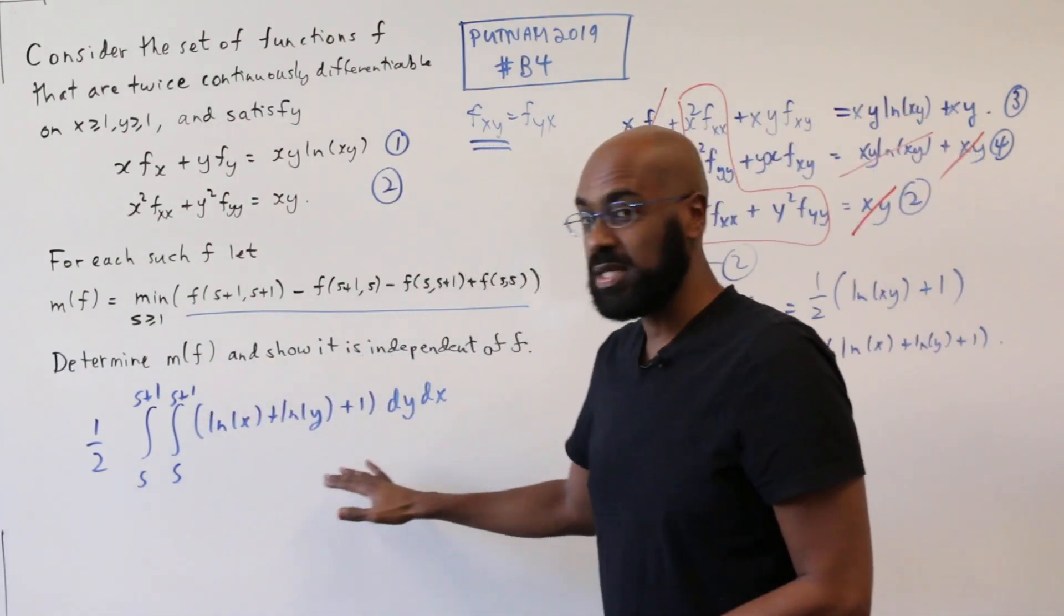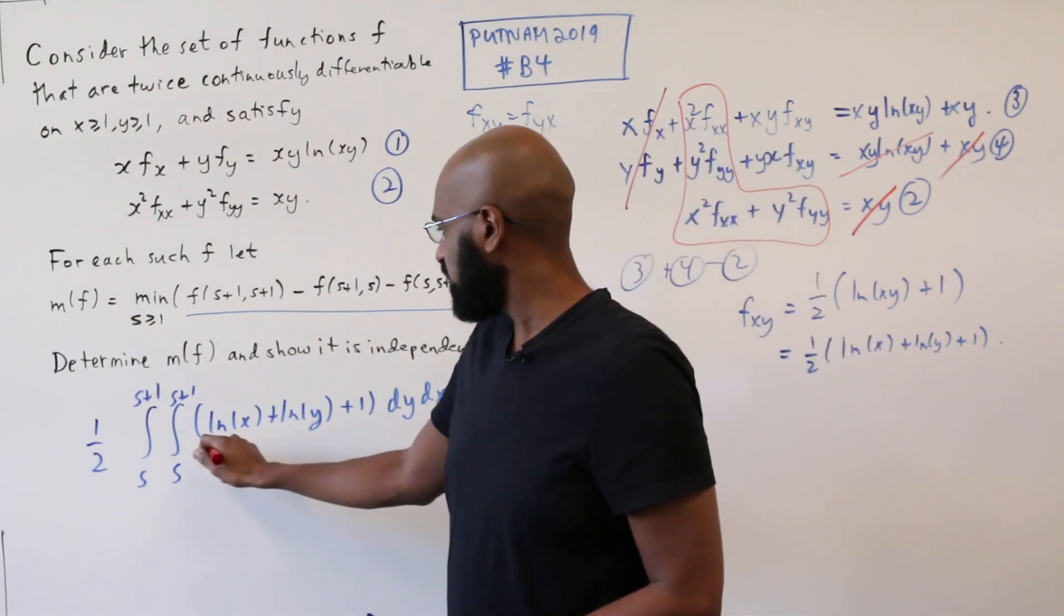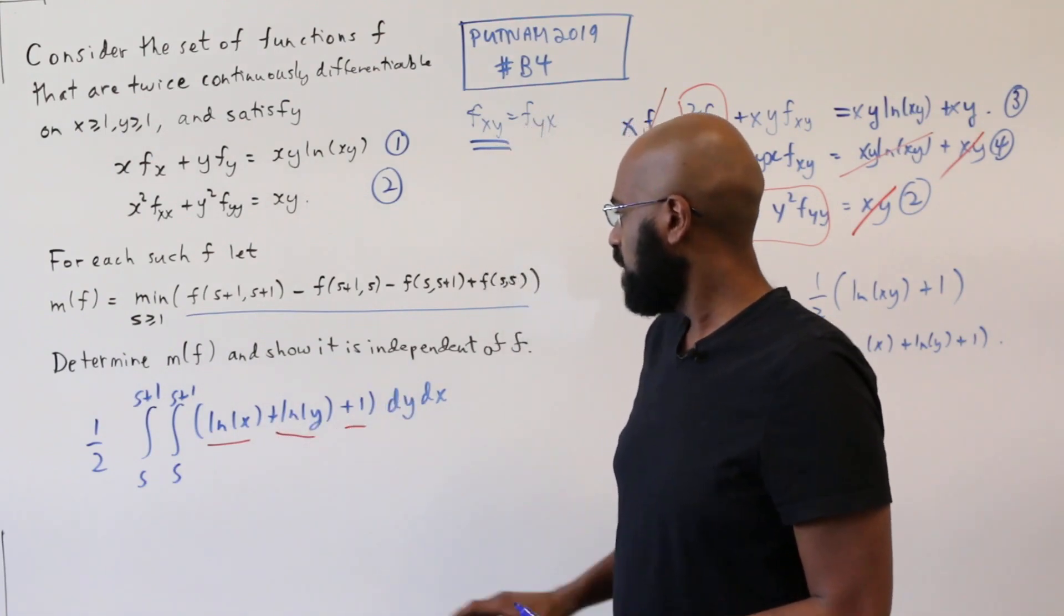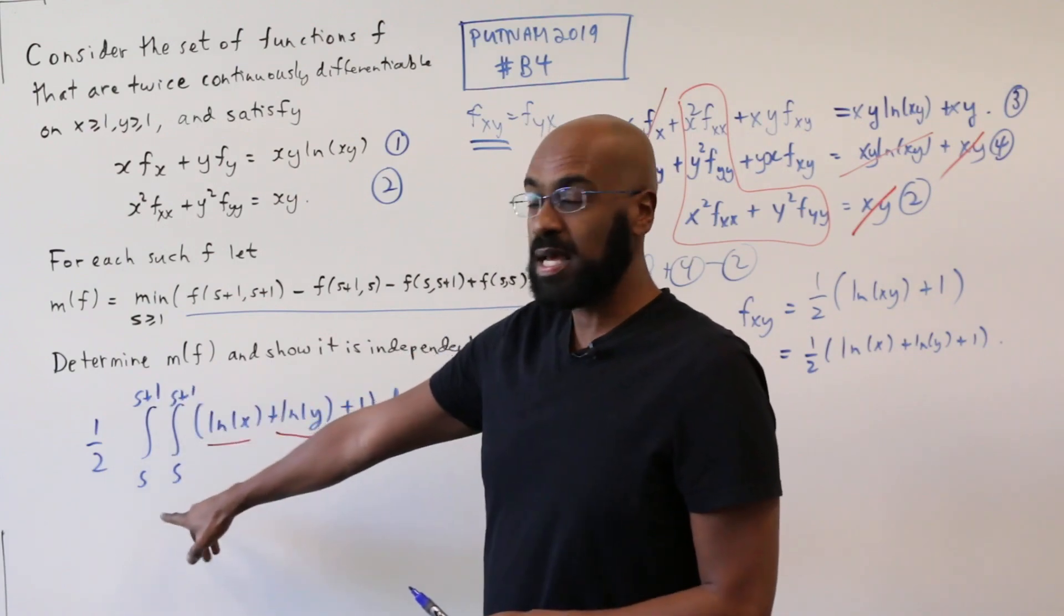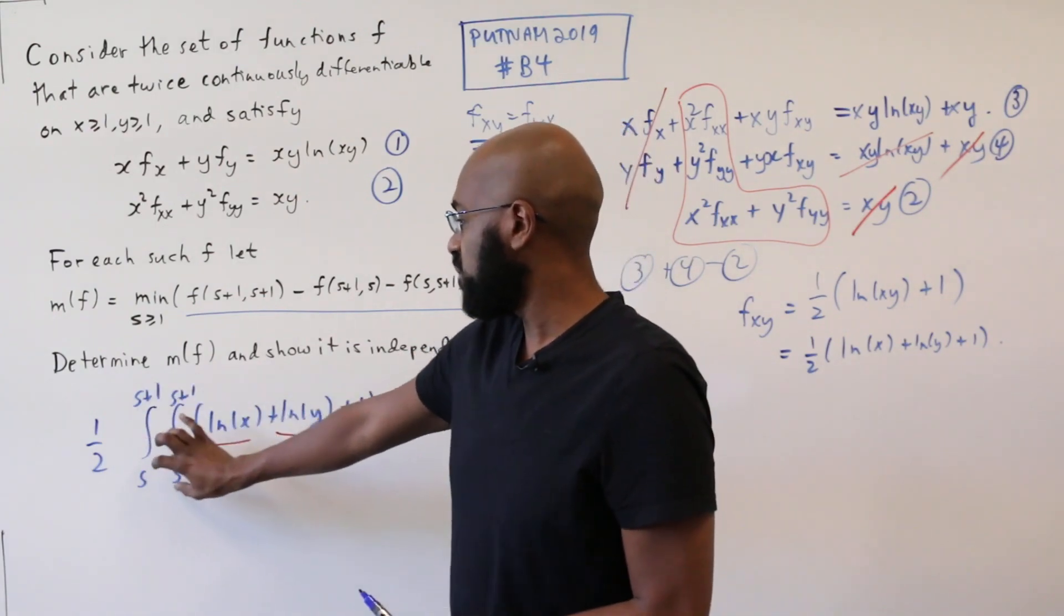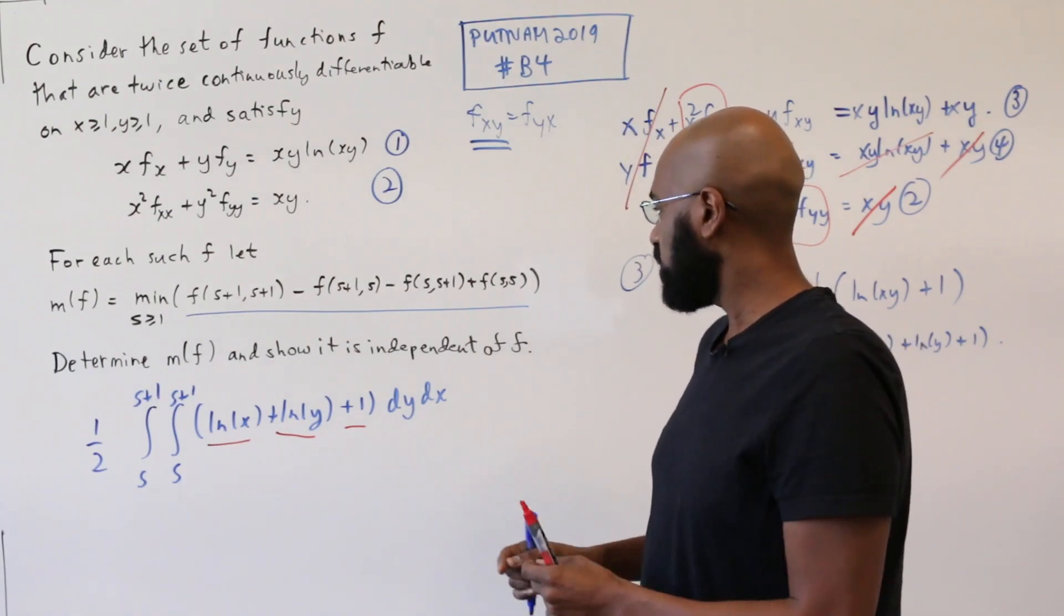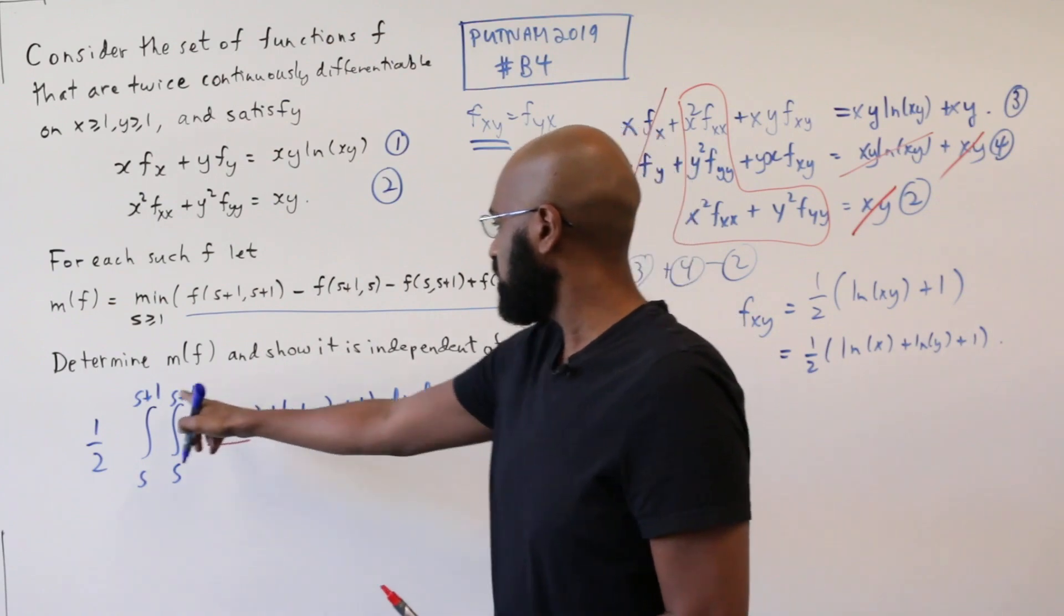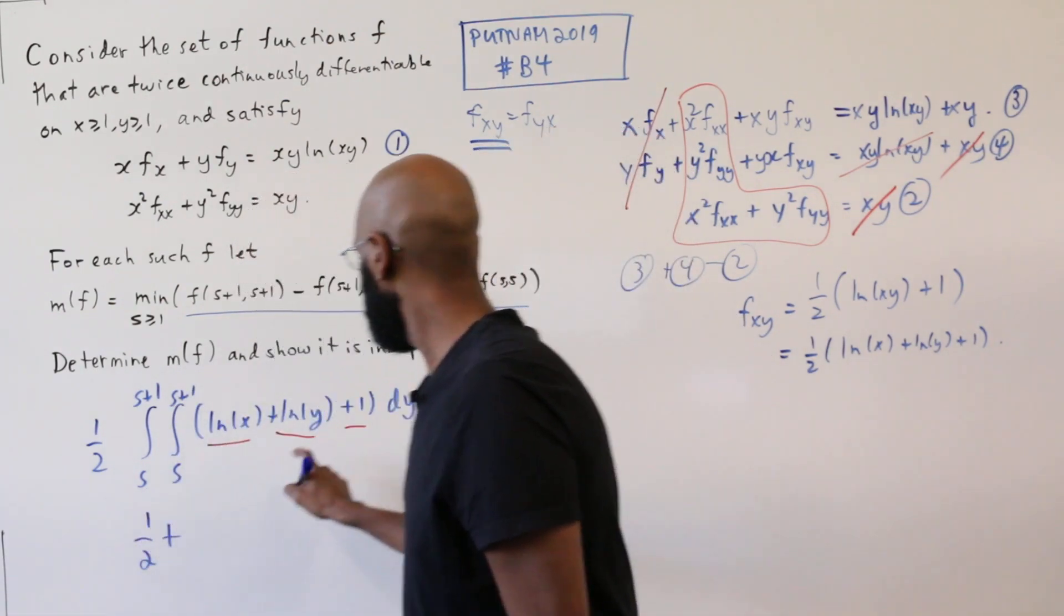Now the question is, what is this integral? We can separate it into a few pieces. The integral of this thing, the integral of this thing, and the integral of this thing. The integral of 1 over this interval is the area of this region. This is a square of side length 1. And so the integral of this constant is 1. And so we get a contribution of a half for this 1 here.